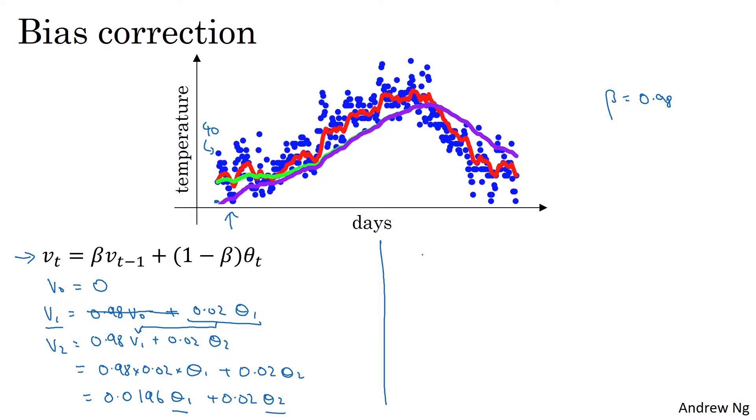So it turns out that there's a way to modify this estimate that makes it much better, that makes it more accurate, especially during this initial phase of your estimates, which is that instead of taking Vt, take Vt divided by 1 minus beta to the power of t, where t is the current day that you're on.